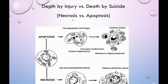Necrosis versus apoptosis: death by cell injury versus death by suicide. In apoptosis, there is cell dehydration and shrinkage, nuclear fragmentation, chromatin condensation, and apoptotic body formation. The membrane integrity is preserved because these are small apoptotic bodies. In necrosis, there is cell and mitochondria swelling, plasma membrane rupture, and the cell cannot maintain its integrity — it bursts and releases its contents.